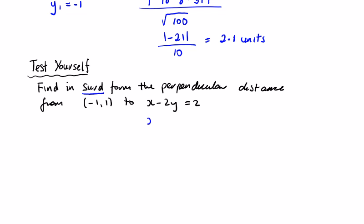You should identify that you need to bring the 2 across. Writing down our values: a = 1, b = −2, c = −2, x₁ = −1, and y₁ = 1.